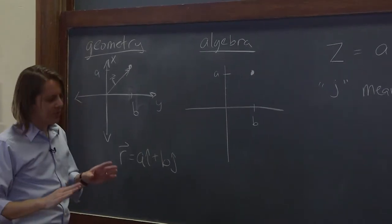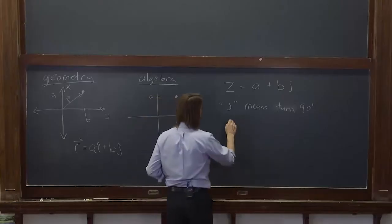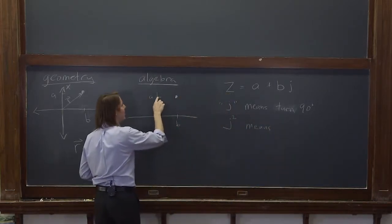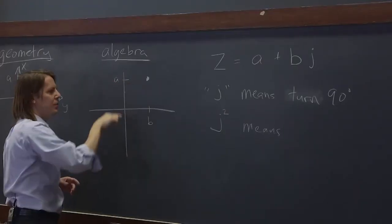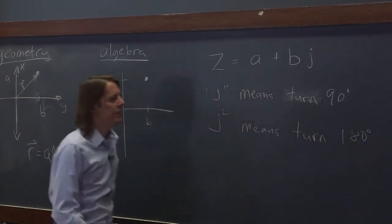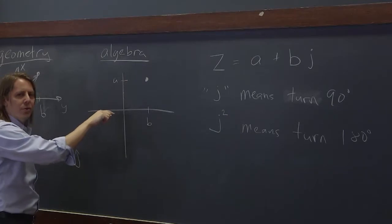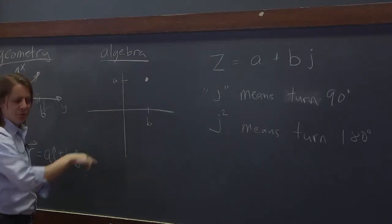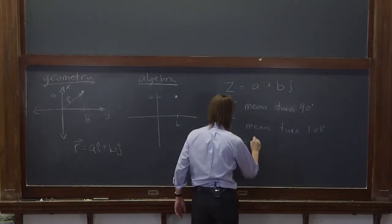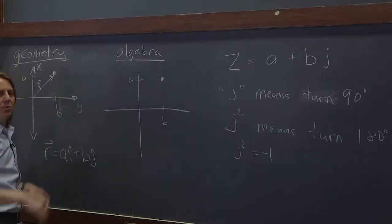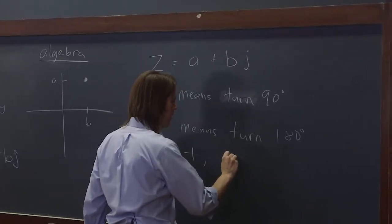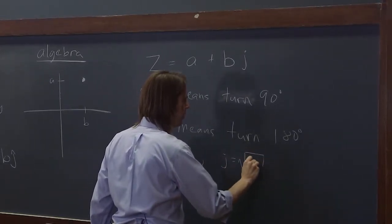It means something else. So if j means turn 90 degrees, what would j squared mean? Well, it would mean you multiply by j, you turn 90. You multiply by j again, you turn back. It means turn 180 degrees. Well, if you turn 180 degrees and then you go, you're going the opposite direction. So j squared then, in terms of algebra, j squared would equal negative 1 in this imaginary world here. If j squared equals negative 1, what does j equal? Then j equals the square root of negative 1.